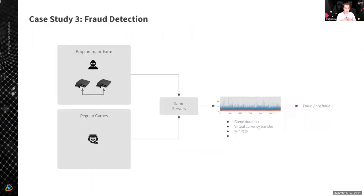The first case study I wanted to show is about fraud detection. It's about a project we did with a video gaming company. Their problem is that they publish games and run game servers, but they have issues with fraudulent activities. Some people build programmatic farms — a number of gaming consoles connected to each other and programmed to play against each other to earn virtual currency, which they then sell on certain sites. The challenge is to take different metrics from the gaming servers — like game durations, virtual currency transfers, and game win rates — and based on these metrics, identify these fraudulent activities.